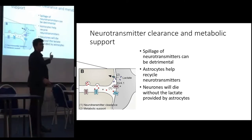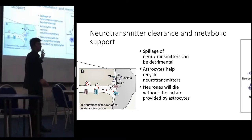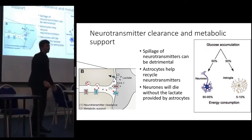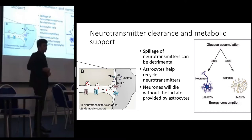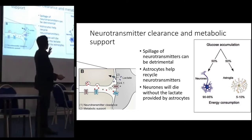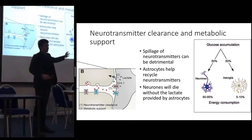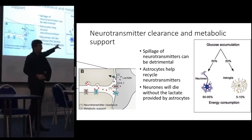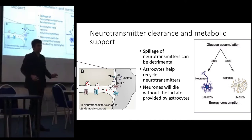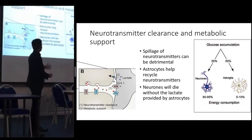Another function of astroglia is providing lactate as fuel for neurons. They do this by building up glycogen reserves, and when the neurons are firing, they convert their glycogen into lactate for the neurons to take up once released into the extracellular fluid. As you can see, neurons use a far larger share of energy than astroglia, despite glucose being accumulated fairly evenly — basically astroglia spoon-feed the neurons.